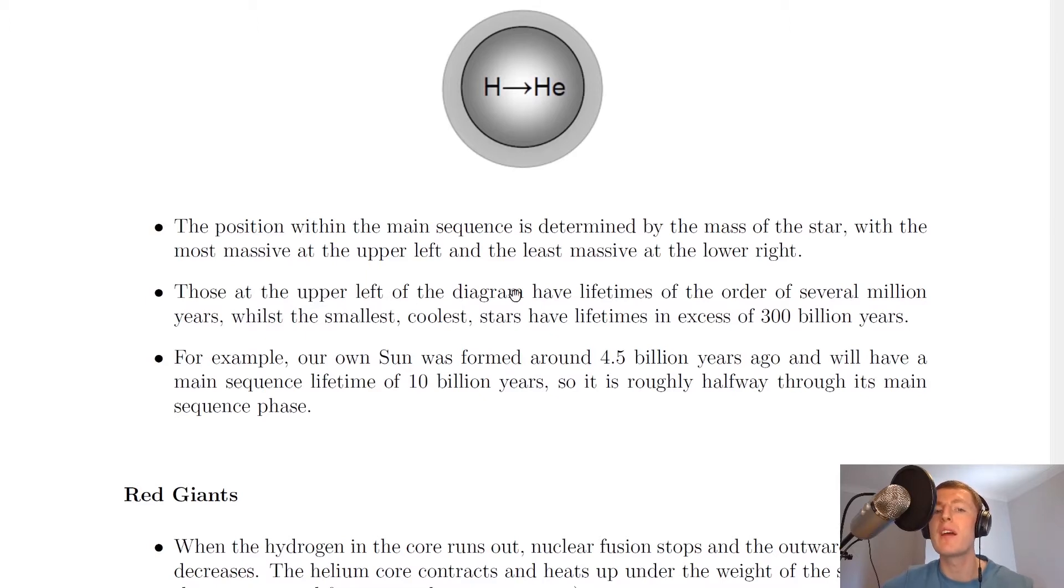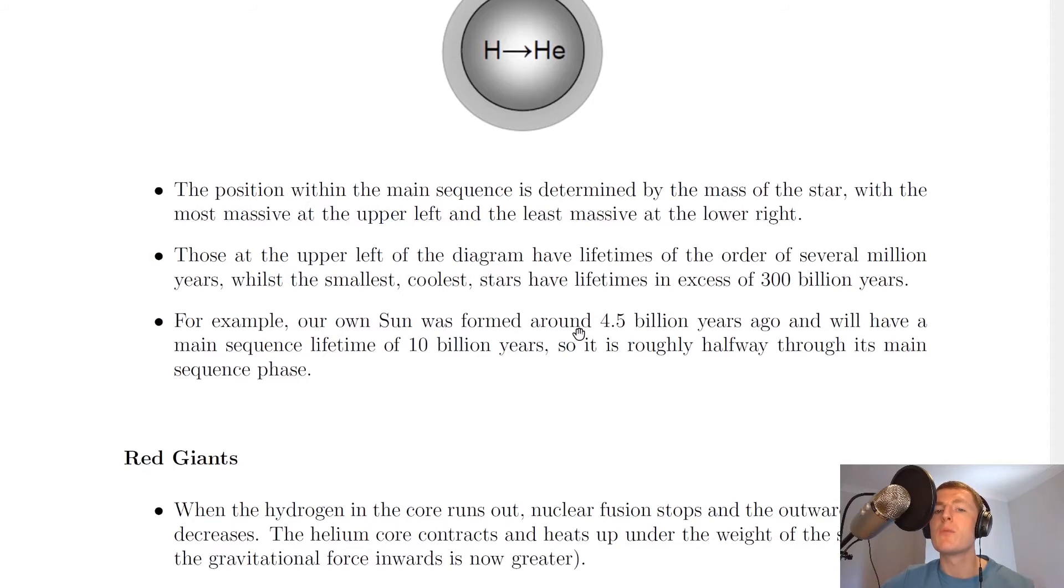Those at the upper left of the diagram have lifetimes of the order of several million years, whilst the smallest, coolest stars have lifetimes in excess of 300 billion years. For example, our own Sun was formed around 4.5 billion years ago and will have a main sequence lifetime of 10 billion years. So it is roughly halfway through its main sequence phase.